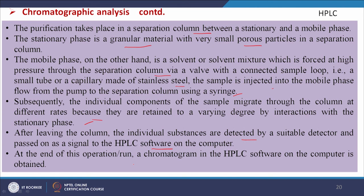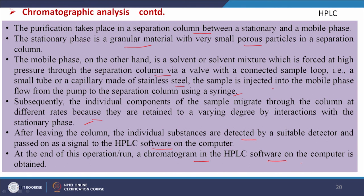At the end of the operation a chromatogram is obtained in the HPLC software on the computer — similar to GC. The baseline indicates no element is coming out, only the mobile phase. When a signal appears, a peak is obtained and this is the retention time TR. In a similar way to the GC process, we can read the peak height and area.